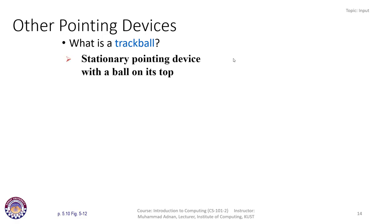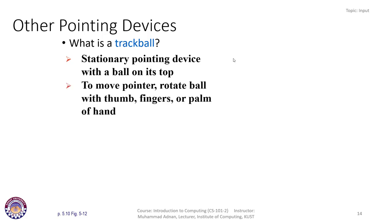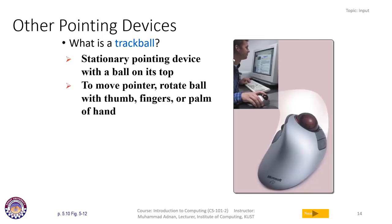We also have a trackball, which is a stationary pointing device with a ball on its top. To move the pointer, you rotate the ball with your thumbs, fingers, or palm. Unlike a normal mouse, the trackball itself doesn't move — the ball is on top, and you rotate it with your thumb, fingers, and palm to move the cursor accordingly.